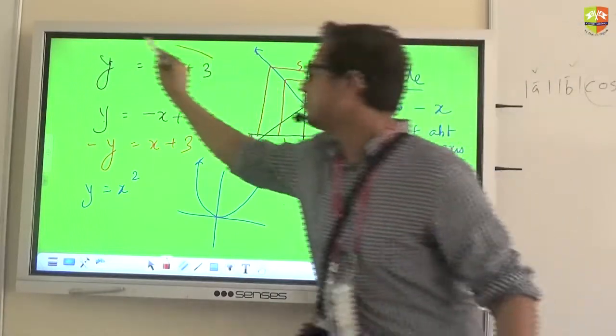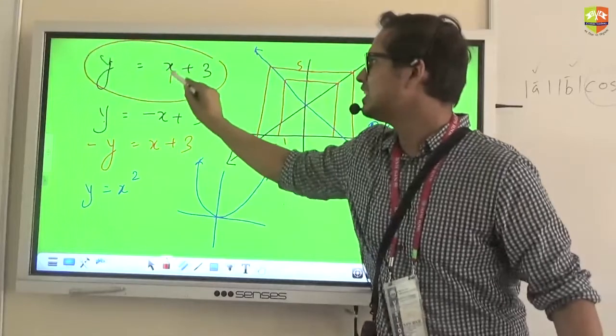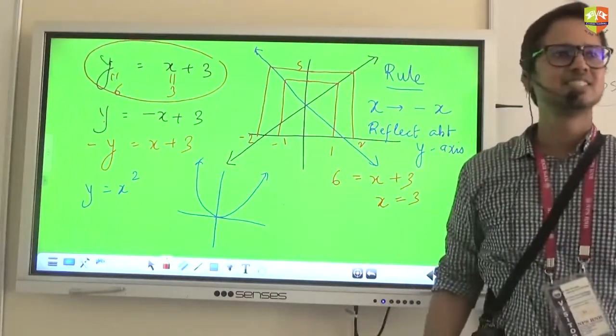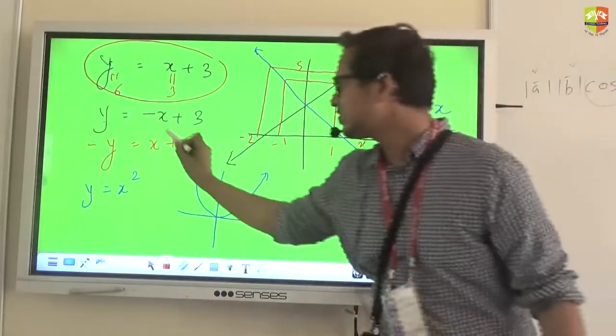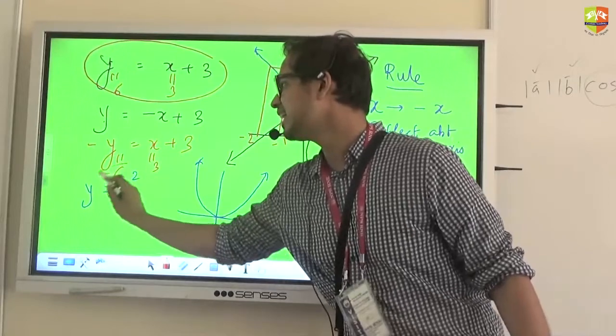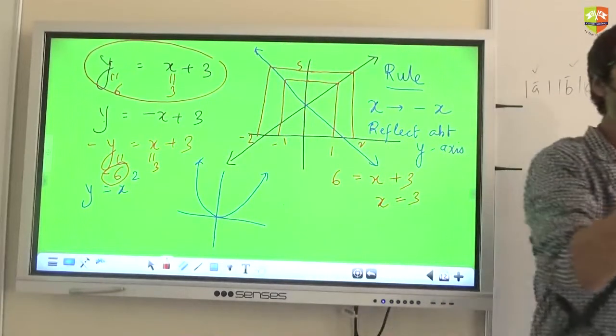In this graph, when X was 3, Y was 6. In this value, if you put X as 3, Y will now become negative 6.